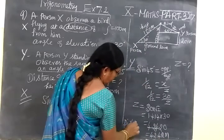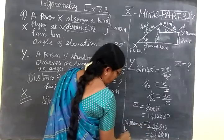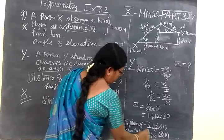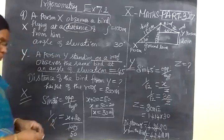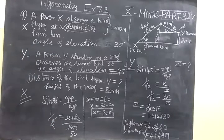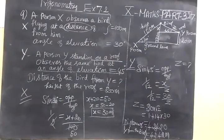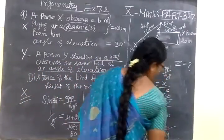Finally, the distance of Y from the bird: person Y stands at a distance of 42.42 meters, which is the answer. Some may have written 30 root 2 itself — that answer is also correct.